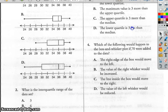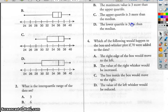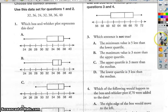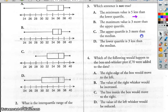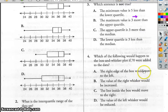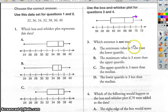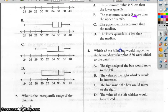Which of the following would happen to the box and whisker plot if 70 were added to the data? So if I added 70 in there, it looks to me like this would move over here. That's what I'm thinking. So the right edge of the box would move left? No, that's not going to happen. It would move to the right. The value of the right whisker would be increased. The right whisker is at 72. 70 is not going to change the whisker.